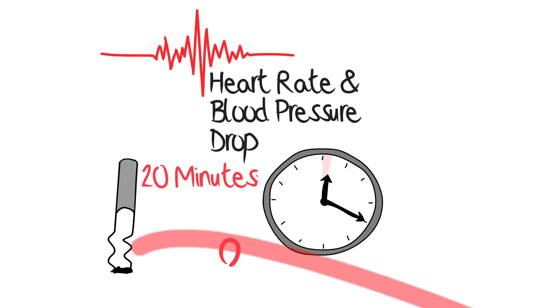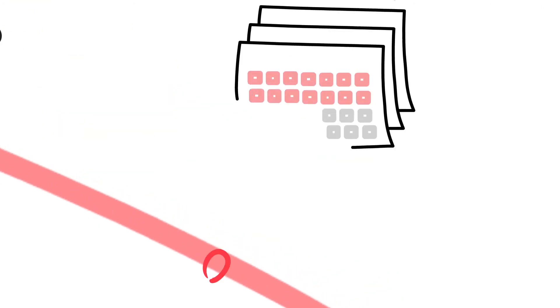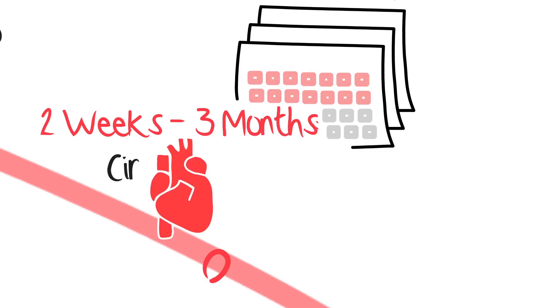After 12 hours, the carbon monoxide in your blood drops to normal. Within 2 weeks to 3 months, your circulation improves and your lung function increases.